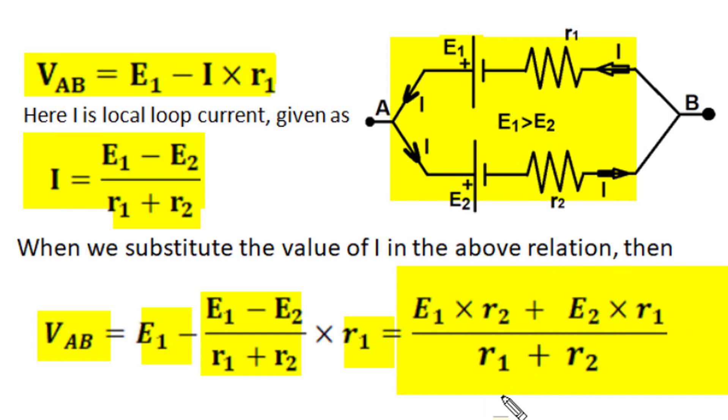On a similar pattern, we can also solve numerical problems. First, we have to find out current in the local loop, and then the difference of rise of EMF and drop of internal resistance will give us the effective EMF of parallel connected cells of two different EMF.